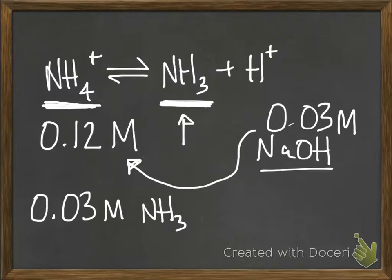For every amount of OH- that you add, it reacts with the same amount of NH4+ to create an equal amount of NH3. So after that reaction, you end up with 0.03 moles per liter of NH3.